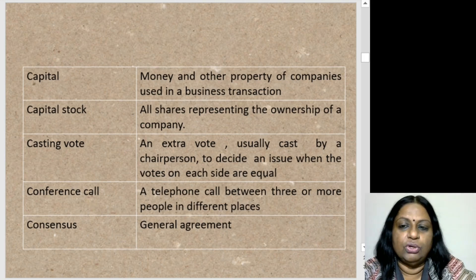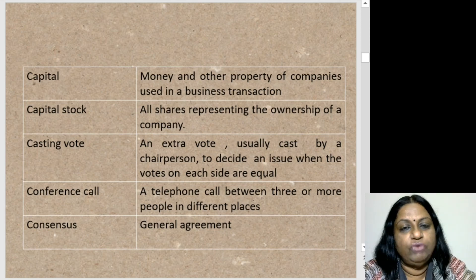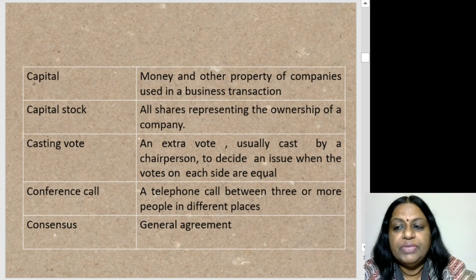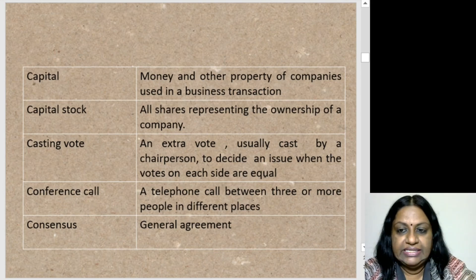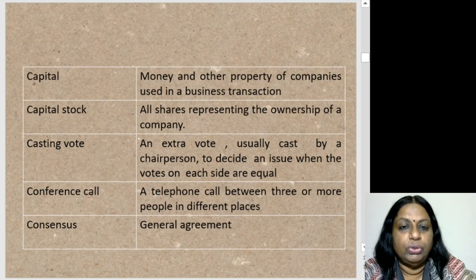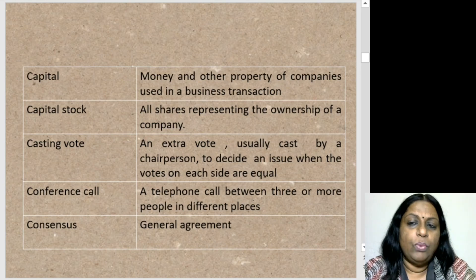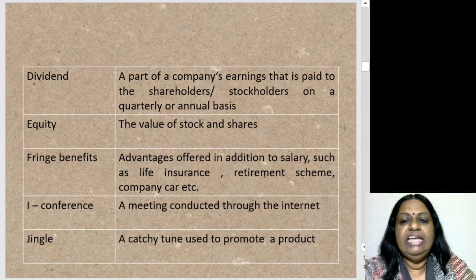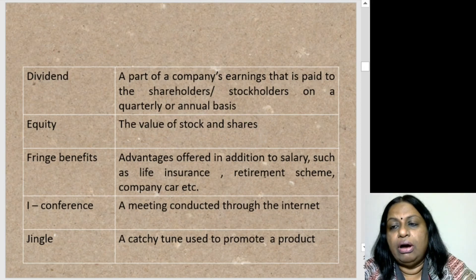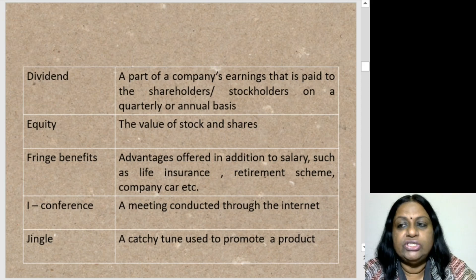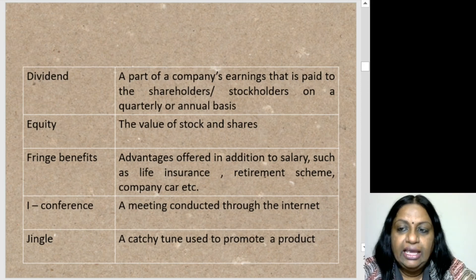Casting vote: an extra vote usually cast by the chairperson to decide an issue when the votes on each side are equal — so when there is a tie, the casting vote of the chairperson is the tiebreaker. Conference call: a telephone call between three or more people in different places. Consensus: general agreement — that is, everybody has come to an agreement over an issue. Dividend: a part of a company's earnings paid to the shareholder or stockholder on a quarterly or annual basis. Equity: the value of shares and stocks.